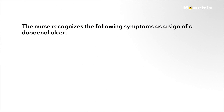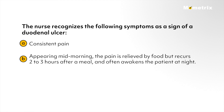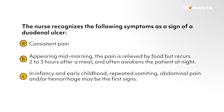The nurse recognizes the following symptoms as a sign of a duodenal ulcer. A) consistent pain; B) appearing mid-morning, the pain is relieved by food but recurs two to three hours after a meal and often awakens the patient at night; C) in infancy and early childhood, repeated vomiting, abdominal pain, and/or hemorrhage may be the first signs; D) all of the above. If you chose D — all of the above — you're right. All of the choices are symptoms of a duodenal ulcer.